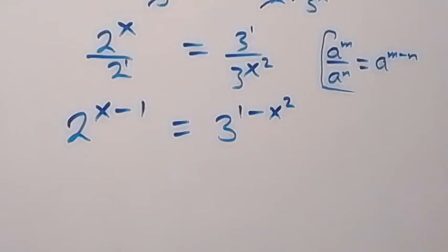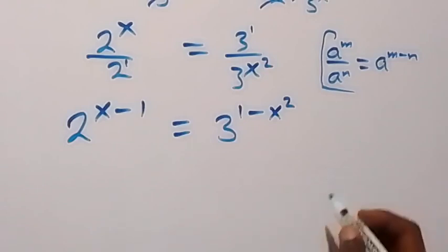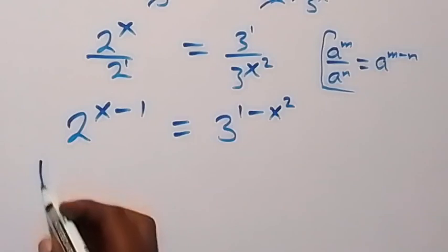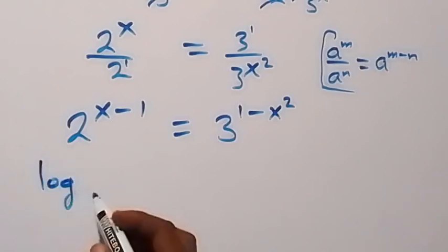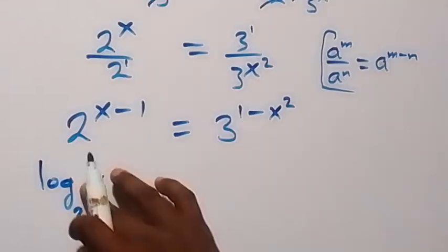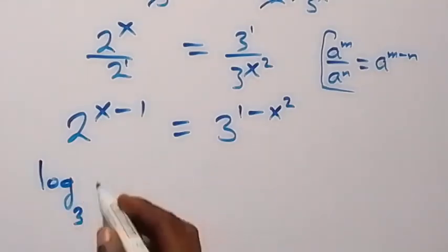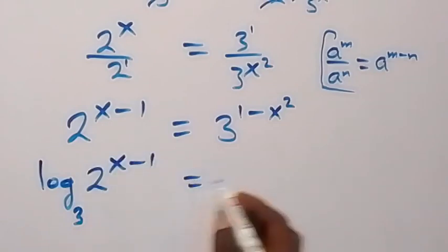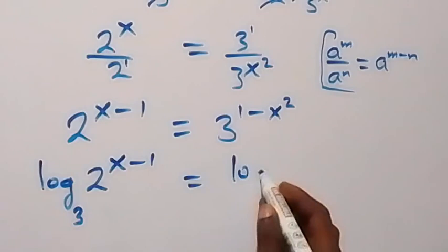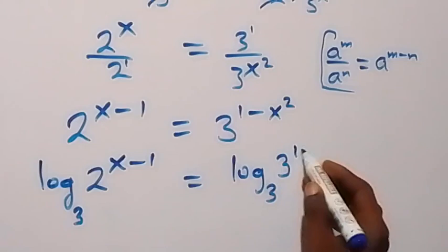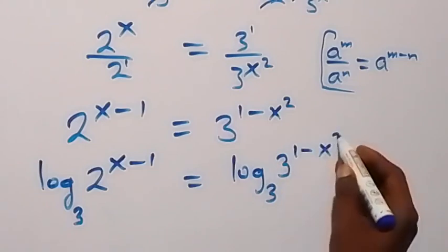Next, from here we can take the log to base 3 on both sides. Taking log base 3 on both sides, we have log base 3 of 2 raised to power x minus 1, equals log base 3 of 3 raised to power 1 minus x squared.